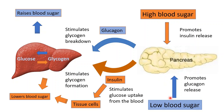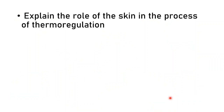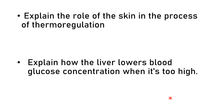In this tutorial we have studied thermoregulation, the control of blood sugar by negative feedback, and the structure of the skin. Now check your understanding: explain the role of the skin in thermoregulation, and explain how the liver lowers glucose concentration when it's too high. Please write your answers in the comments below. Subscribe, activate notifications, like and share the video. Thank you for watching.